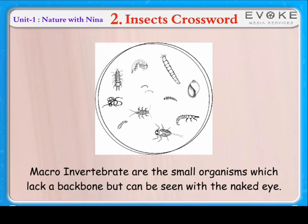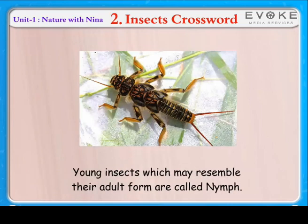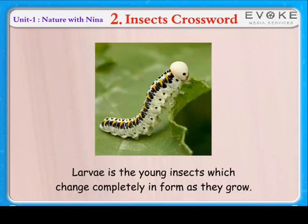Macroinvertebrates are the small organisms which lack a backbone but can be seen with the naked eye. Young insects which may resemble their adult form are called nymphs. Larva is the young insect which changes completely in form as it grows.